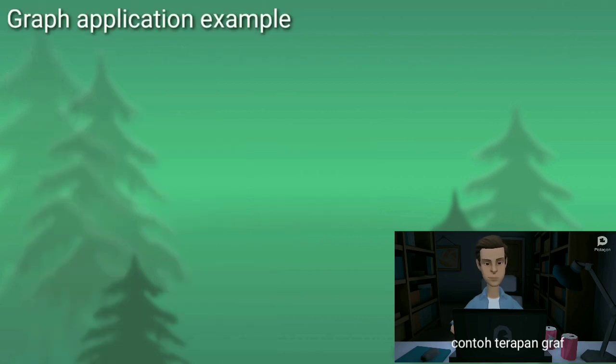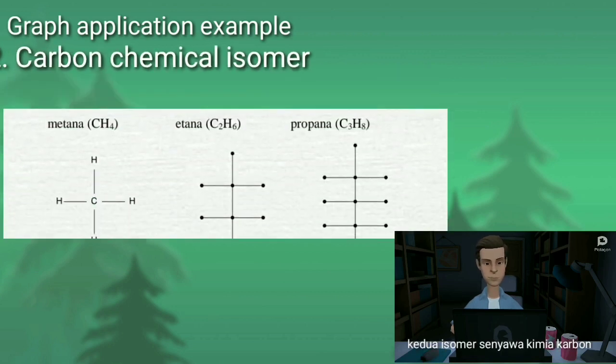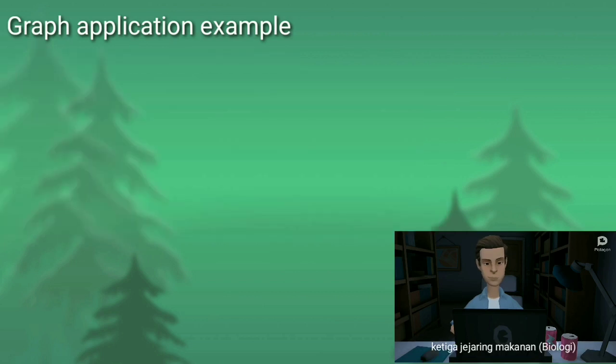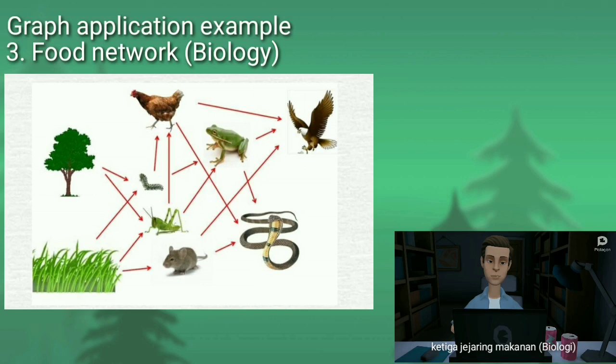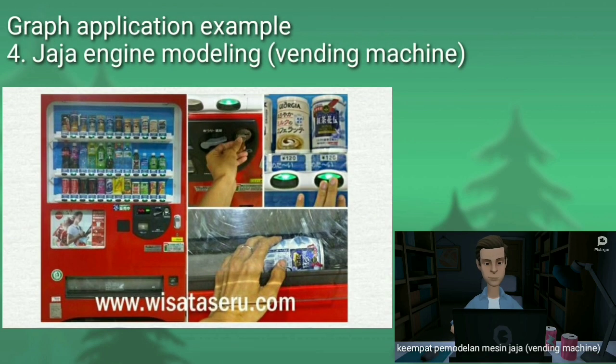Graph application examples. First, electrical circuit. Second, carbon chemical isomer. Third, food network biology. And fourth, Java and Jane modeling or vending machine.